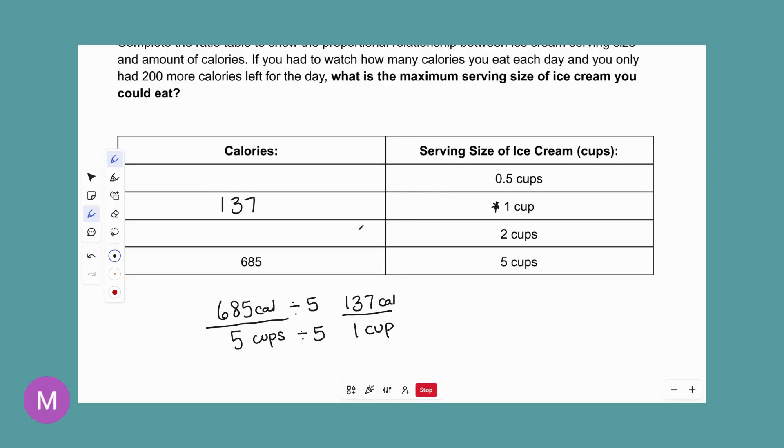Now we can kind of work whichever way you want to find the two cups and the half a cup. So to go from one to two, we multiply by two. So I could multiply this by two. Or if you like to set it up this way, you can. We would times by two. So we're going to times this by two. And if you times 137 by two, you get 274. So 274 calories for two cups of ice cream.